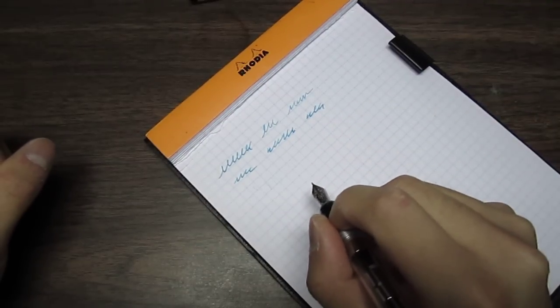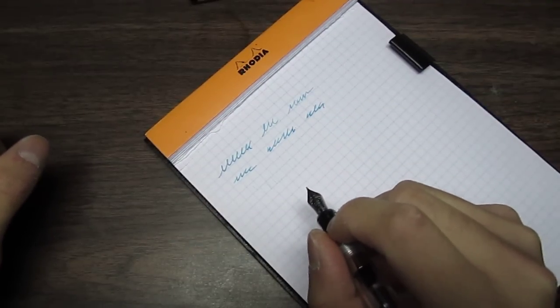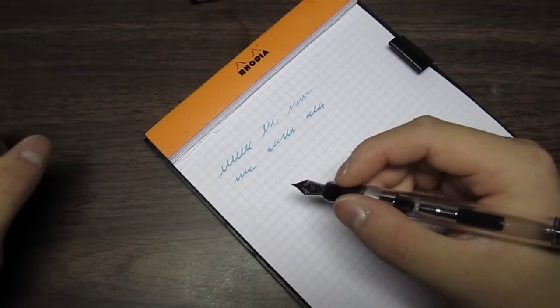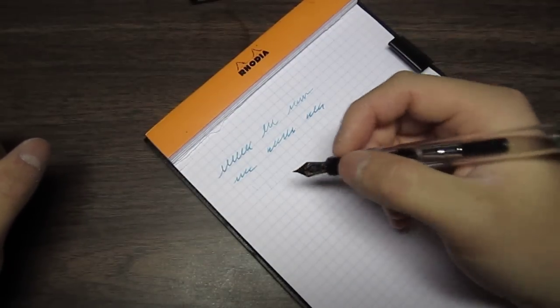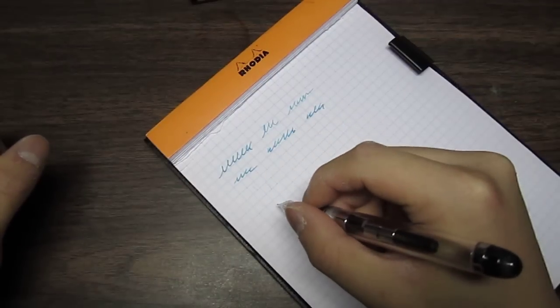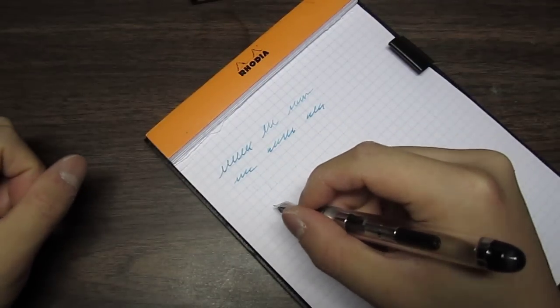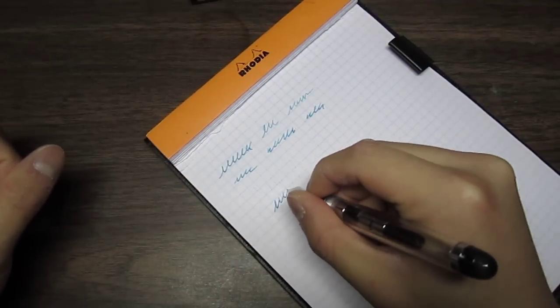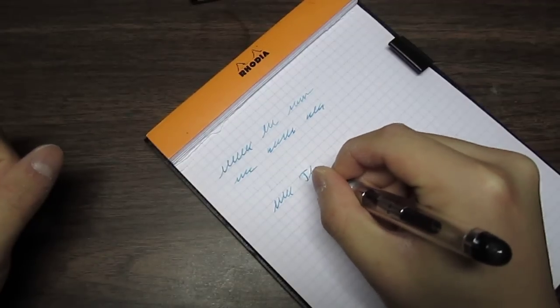Angle of the nib doesn't really matter for most nibs. There are oblique cut nibs that do kind of matter what angle you're writing it at. For me, my general writing, the nib is slanted to the paper. Let me actually write something.